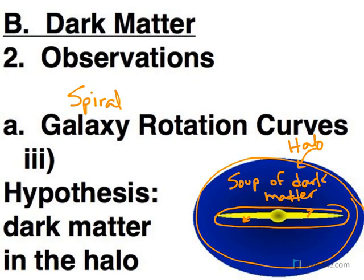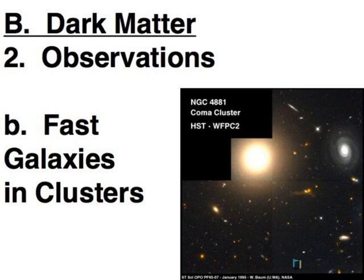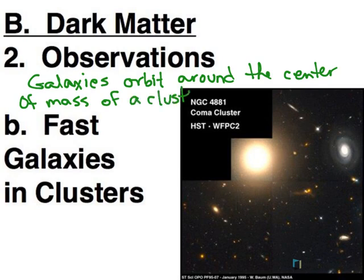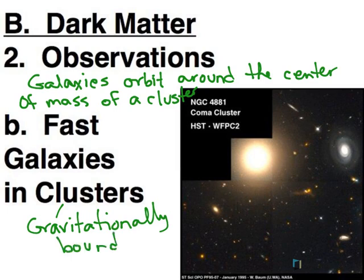There's a second place we see evidence for dark matter. That's looking at the galaxies in a cluster. Now in a cluster, galaxies orbit around the center of mass of the cluster. Because recall, a cluster is gravitationally bound together. So all of these galaxies stay together but they are in motion. They're all orbiting around this center of mass somewhere. So they all have speeds associated with their orbit.